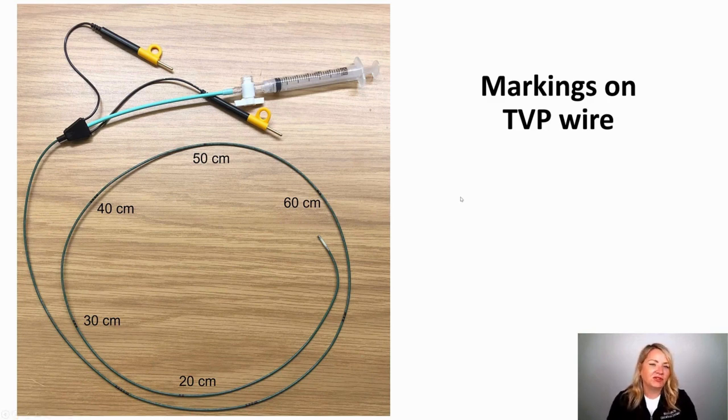It's always helpful to know what normal is to understand, like if I've got a catheter that's in at like the 60 centimeter mark, that's in pretty far and I'm wondering is it coiling in the right ventricle?